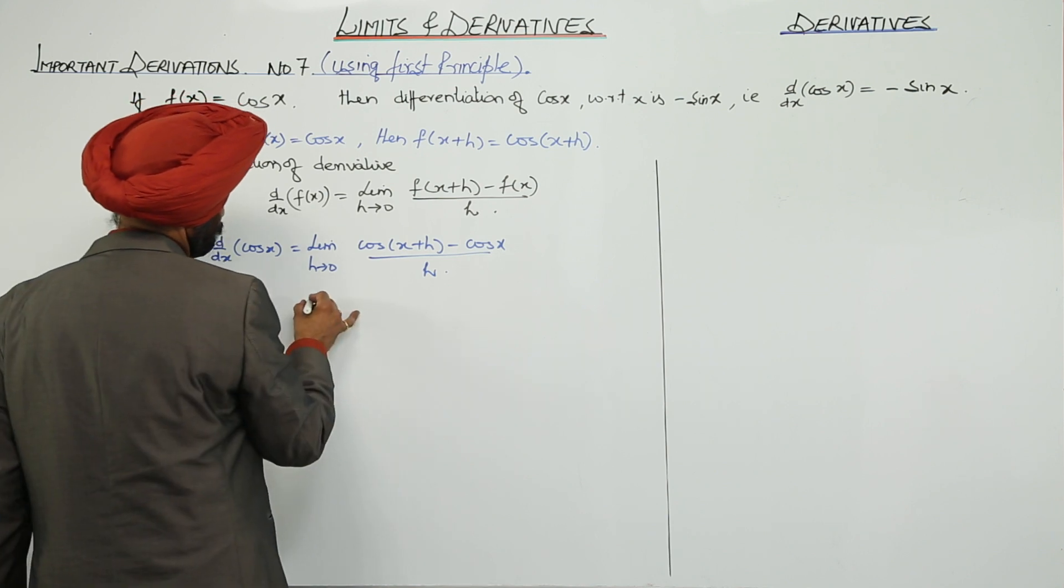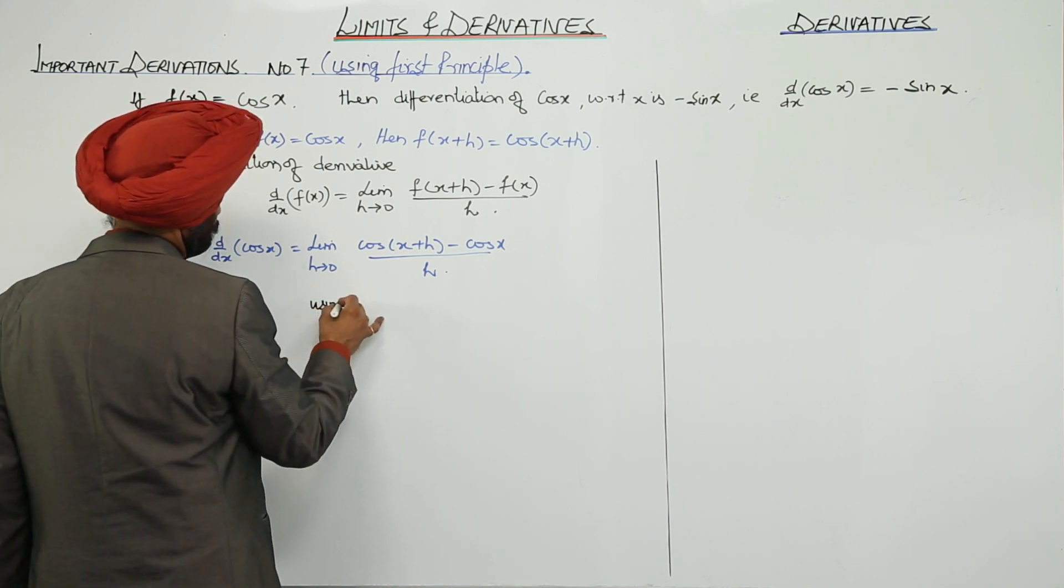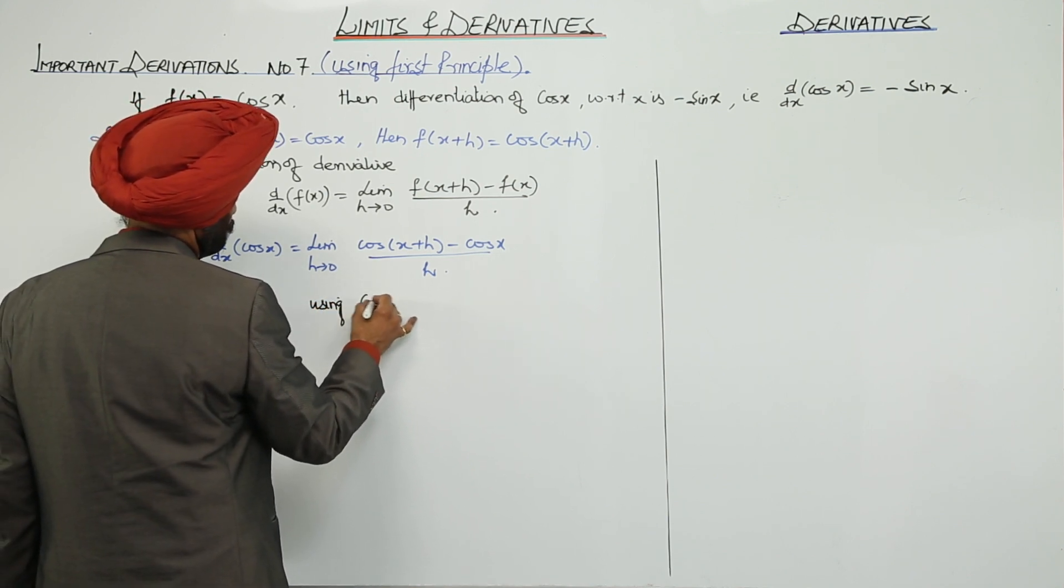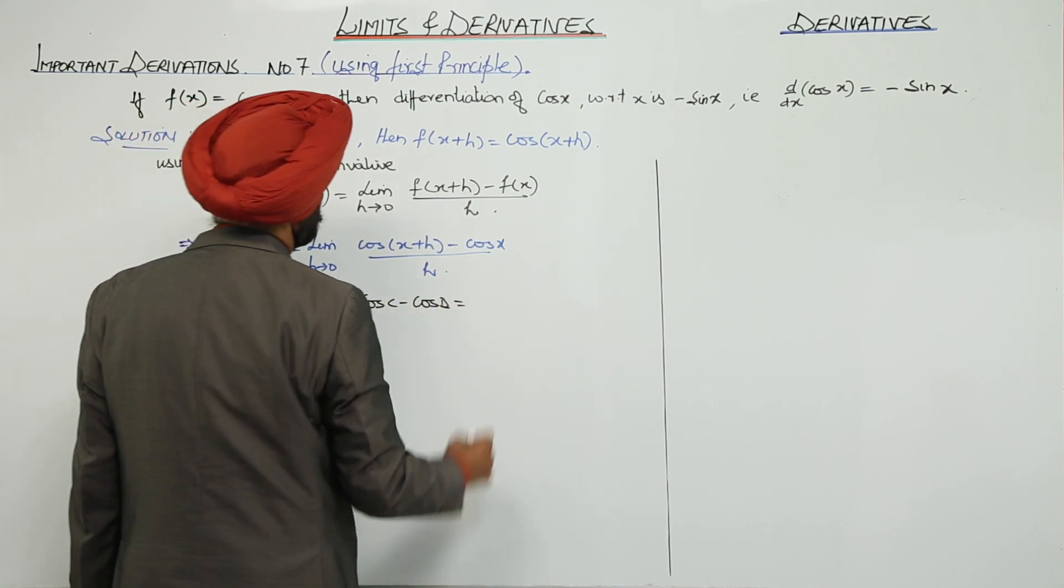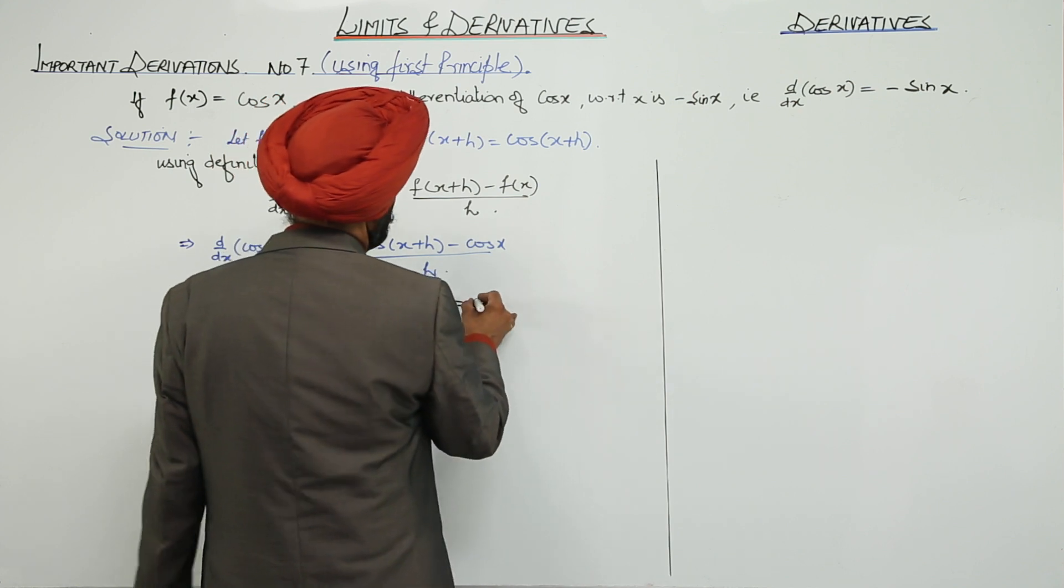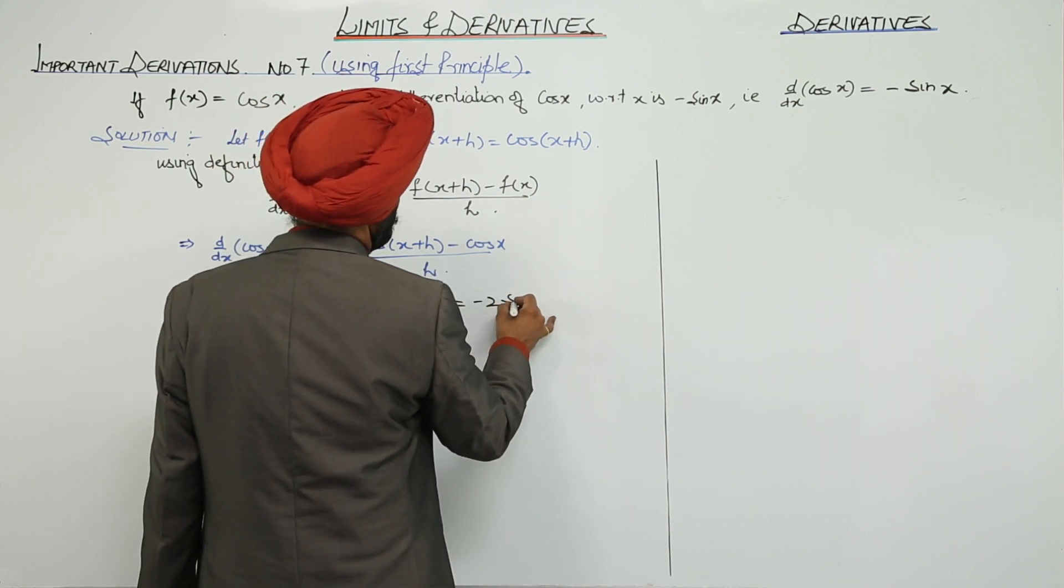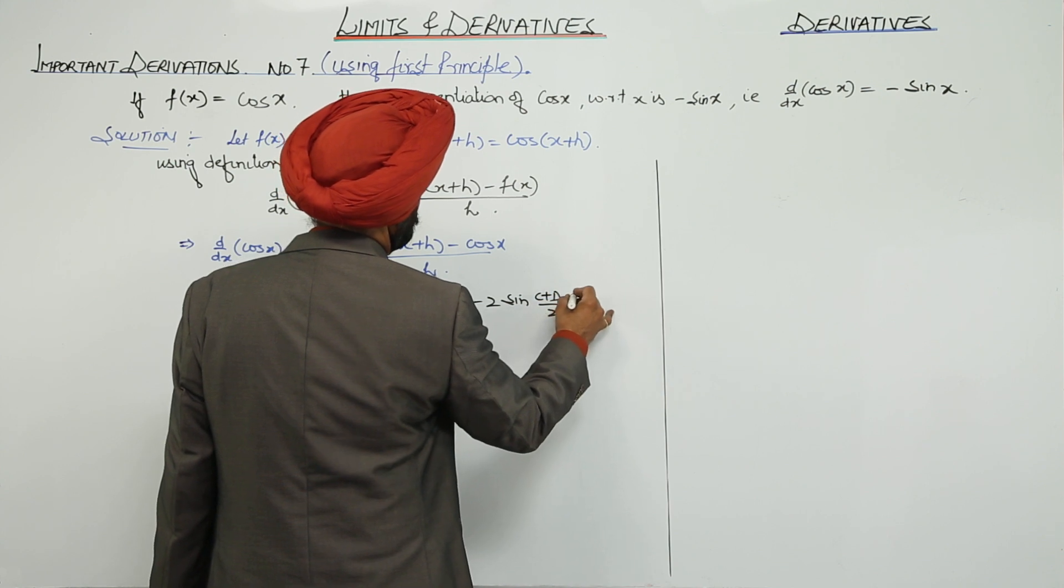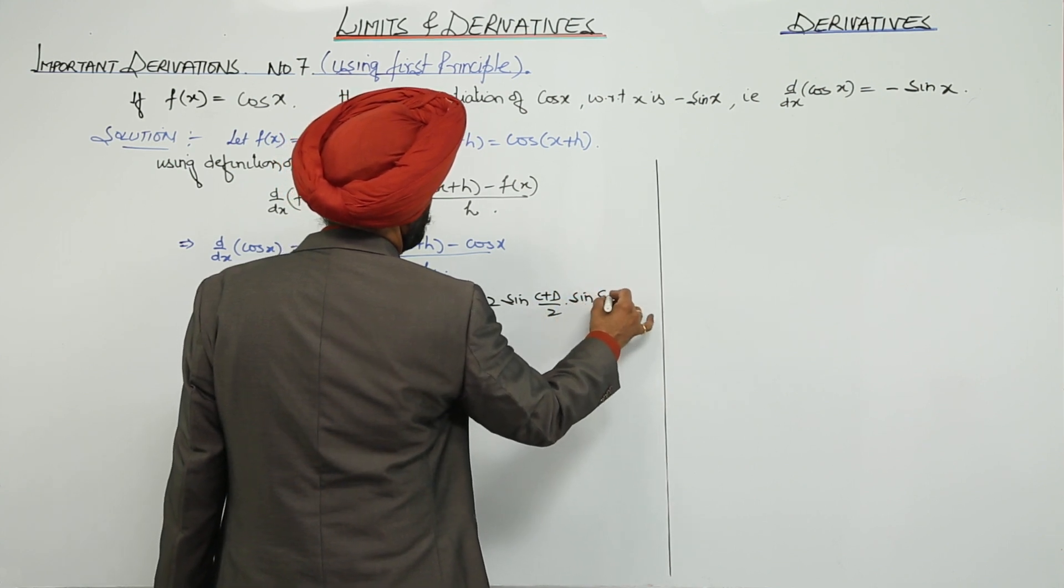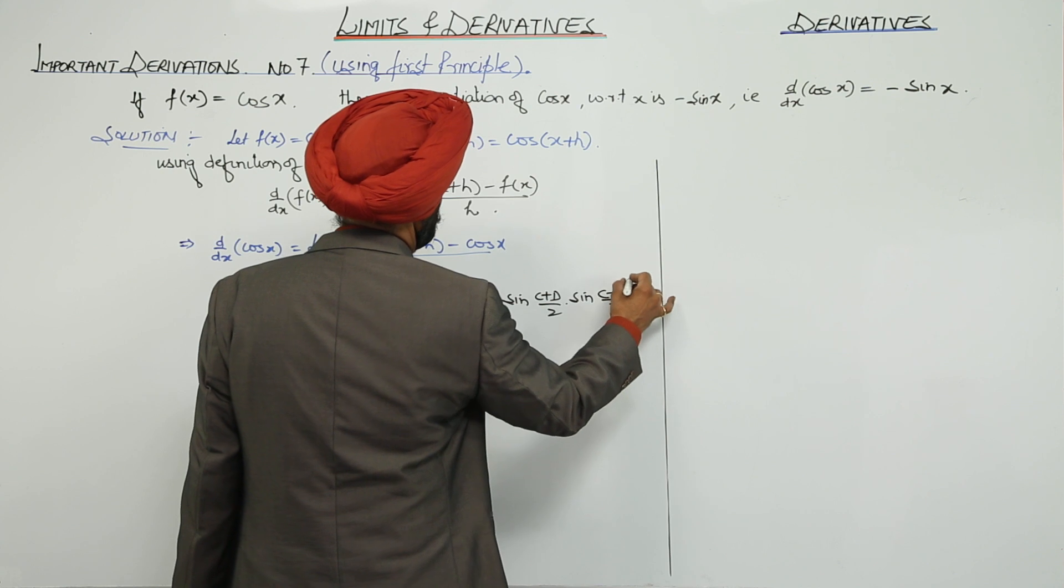Now, using the formula cos C minus cos D, it is what? Negative of 2 sin((C + D)/2) sin((C - D)/2).